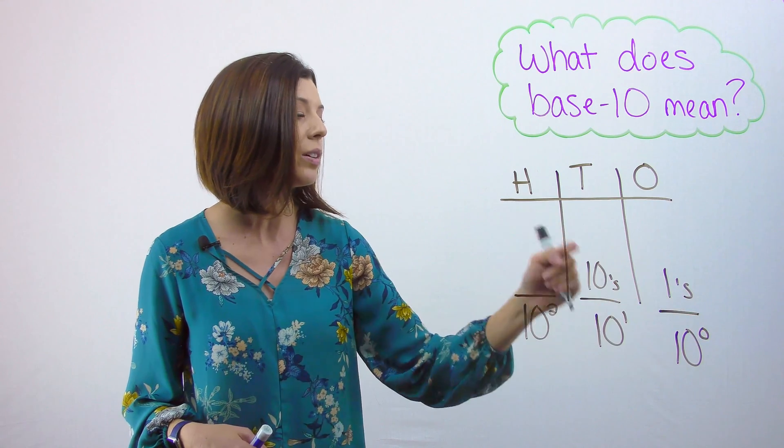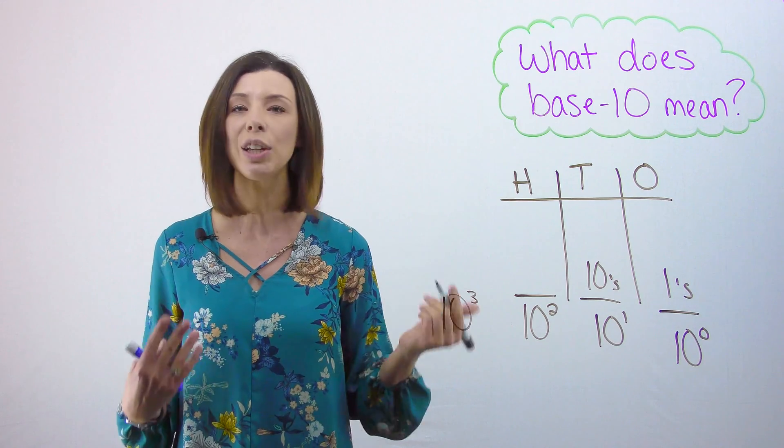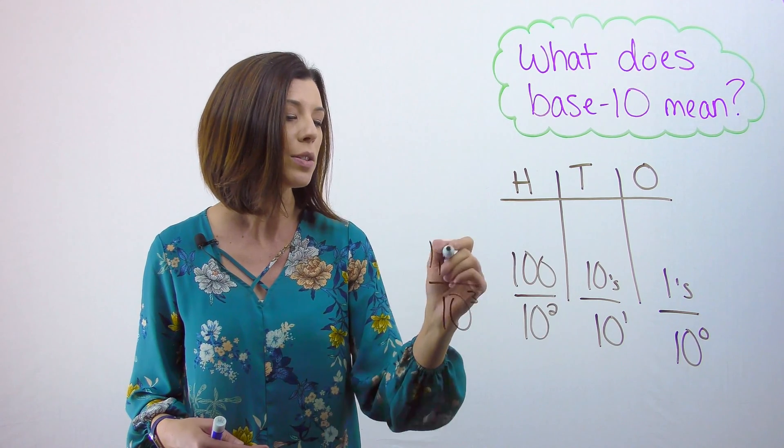I have to the power of 0, 1, 2. I can keep going for the thousands place. I've got 10 cubed. So 10 squared is 100, 10 cubed is 1000.